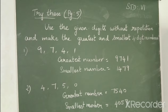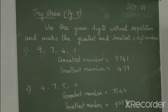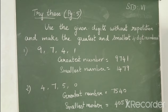Now look at the next sum. Try these given on page number 5: use the given digits without repetition and make the greatest and smallest 4-digit numbers. Four different numbers are given and we have to make the greatest and smallest 4-digit number. The condition is without repetition, meaning we should not repeat the digits.